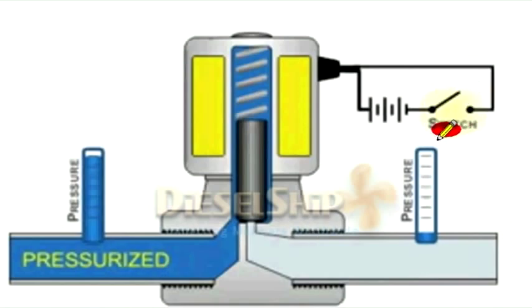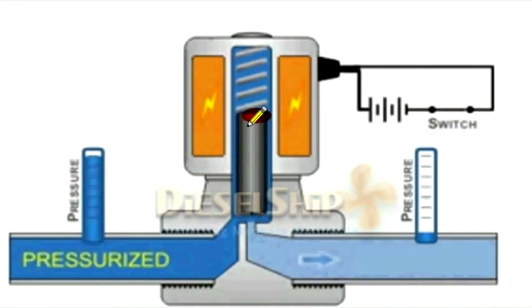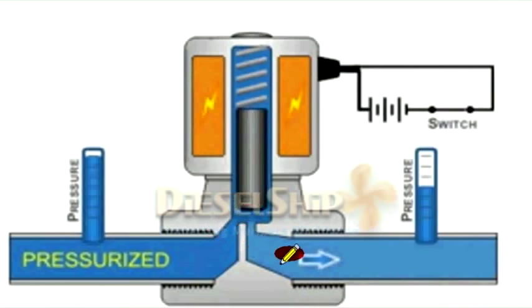Now the coil is getting energized and the switch is closed. The electromagnetic coils are energized, pulling this coil up. As it is getting pulled up, the pressurized fluid starts to flow through the valve from upstream to downstream and both sides' pressure is equal. Now the fluid starts to flow.